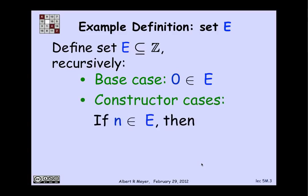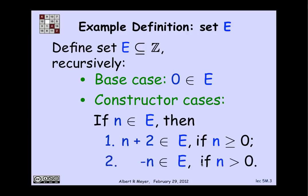And I'm going to give you two constructors. The first one says that if you have an n that's in E, you can add 2 to it and get a new element in E, providing that n is not negative. The second constructor is that if you have an n that's in E, you can negate it. You can take minus n, providing that n is positive.